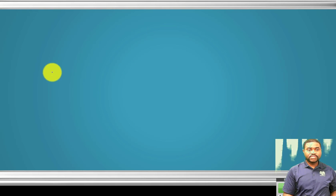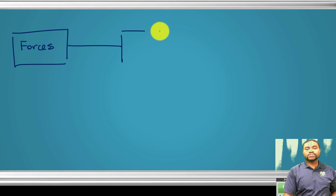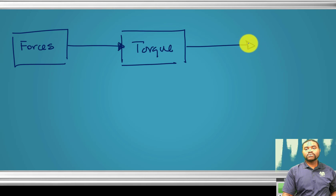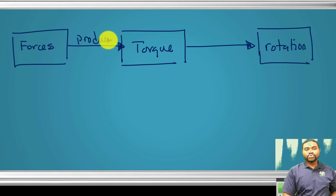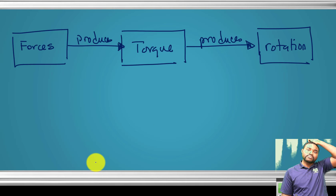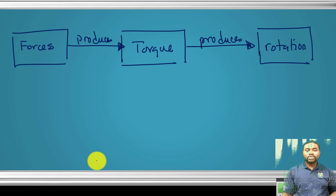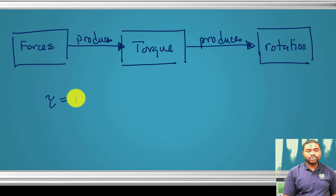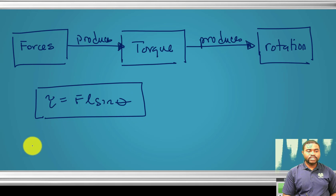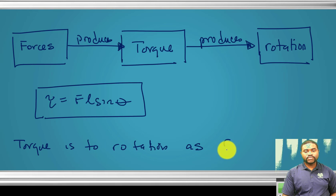To make this clear: forces give rise to torque, and torque gives rise to rotation. So forces produce torque, which in turn produces rotation. By definition, torque τ = FL sin θ. Write this down: torque is to rotation as force is to translation.